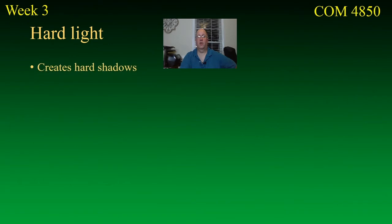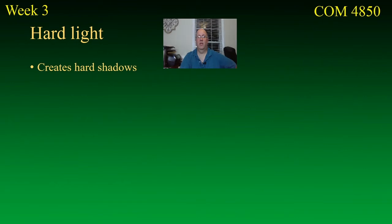Hard light creates hard shadows. If you have a hard light, you are going to have a clearly defined shadow of whatever your object is. For example, on a sunny day standing in a parking lot, you'll cast a shadow that is very clearly defined — etched and razor-sharp. Wherever the sun happens to be pointing, the shadow will be pointing in the opposite direction, which can be a useful effect.